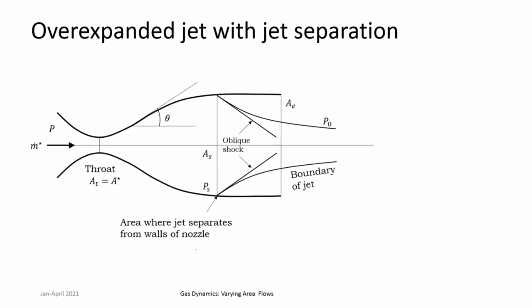There are cases where oblique shocks can move at corresponding pressure ratios into the nozzle and separate the jet out due to shock-wave boundary layer interaction. These form the various different operating regimes for a convergent-divergent nozzle. In the next class, we will understand them in more detail through a particular problem, so that the relationship between area ratio, pressure ratio, and the way the nozzle operates becomes clear. With this we close on how a CD nozzle works, its various operating conditions, and their relationship with pressure ratio and area ratio.